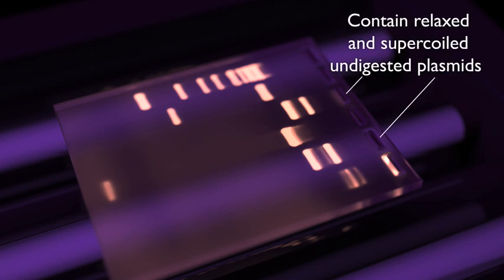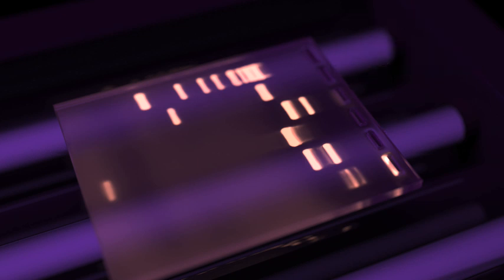The control lanes carry the original, uncut, and cut plasmids, which migrate at a different rate when compared to the recombinant plasmid. The control samples confirm that the sixth lane actually contains recombinant plasmid.